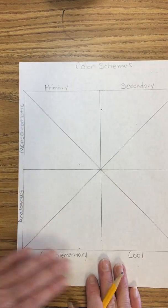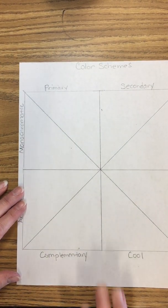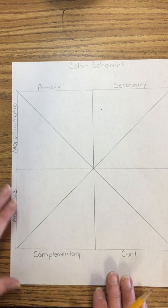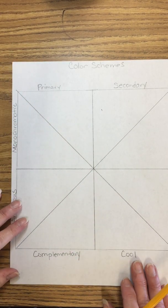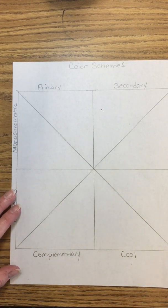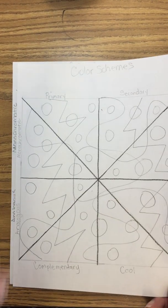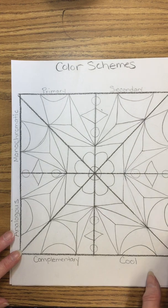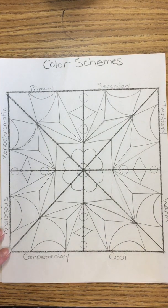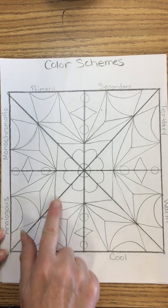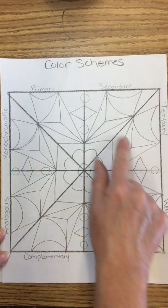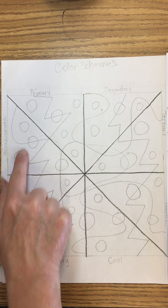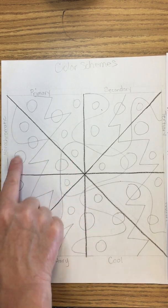Okay, monochromatic. Now you have the definitions for each one of those color schemes, so it's not necessary to write all of this down again on this paper. What I would like for you to do next is to create a pattern. This pattern can be done asymmetrically, making it abstract, or you can make it symmetrical and do the same design all the way around. Either way, you are going to create a pattern that flows from every section and covers every section. You should have at least three to four circles in each one of these sections.